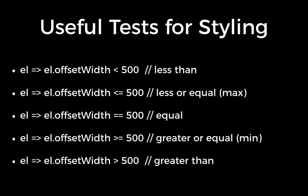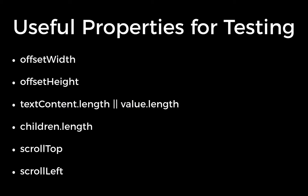Some useful tests for styling: you can compare numbers — less than, less than or equal, equal, greater than or equal, or greater than. Two of those correlate to min or max. There are also a number of properties on most elements you can test, like offset width, height, text content length or value length, children length, and scroll position.